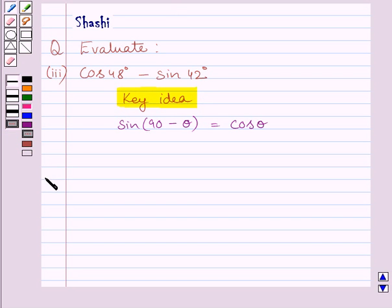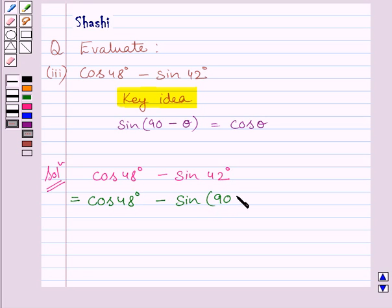Let us now start with the solution. We have to find cos 48 degrees minus sin 42 degrees. Now we know 48 degrees and 42 degrees are complementary angles. Now this 42 degrees can be written as 90 minus 48 degrees. So we can write this expression is equal to cos 48 degrees minus sin 90 minus 48 degrees.